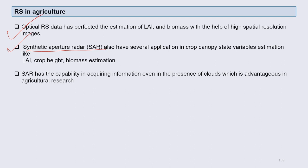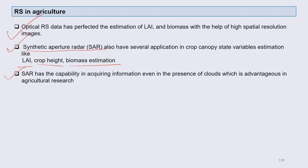SAR also has several applications in crop canopy state variable estimation, like leaf area index, crop height, and biomass estimation. SAR also has the capability of acquiring information even in the presence of clouds, which is advantageous for Indian agriculture research where cloud cover is frequent. We have a long rainy season and various parts receive rain at different times, so in our situation SAR can be a very useful tool.